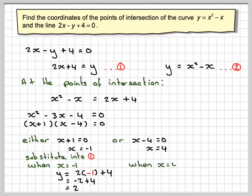And when x is equal to 4, we're going to have that y is 2 times 4 plus 4, which is 8 plus 4, which is equal to 12.